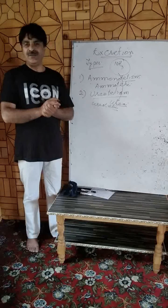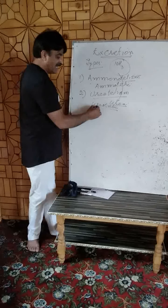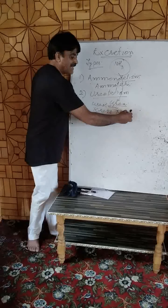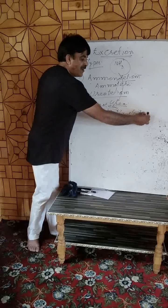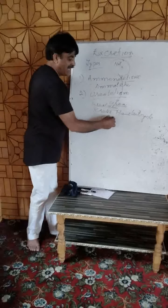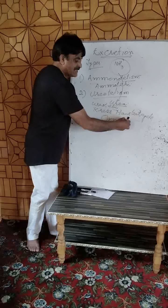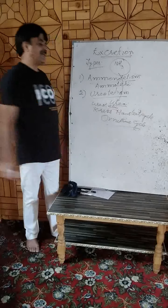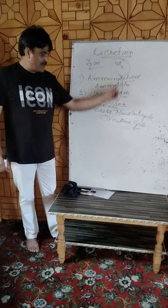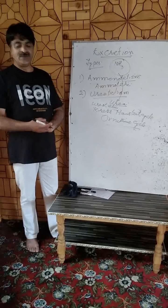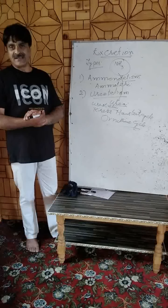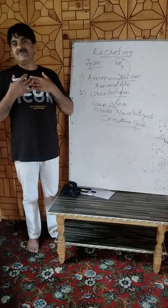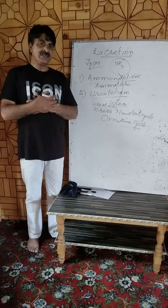The process by virtue of which ammonia is converted into urea is called the Krebs-Henseleit cycle, also called the ornithine cycle. This process takes place within the liver of animals. Ureotelic animals include human beings and the majority of mammals.